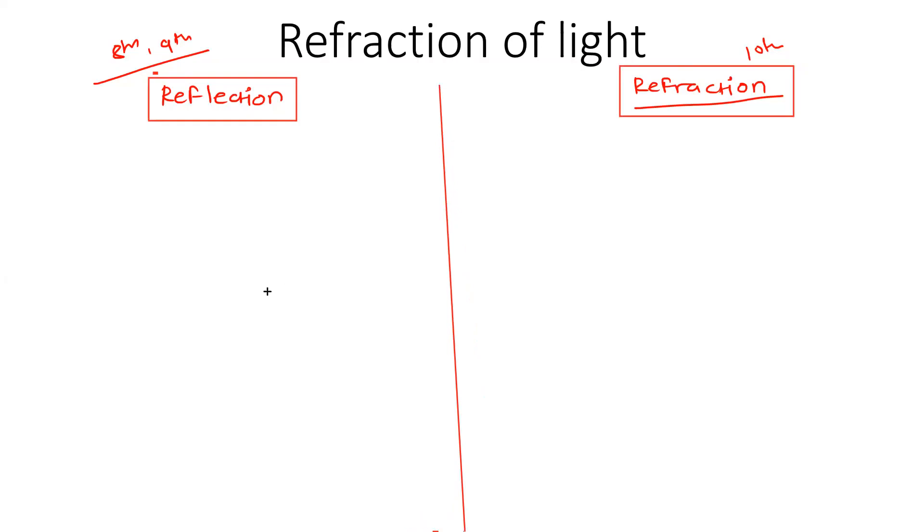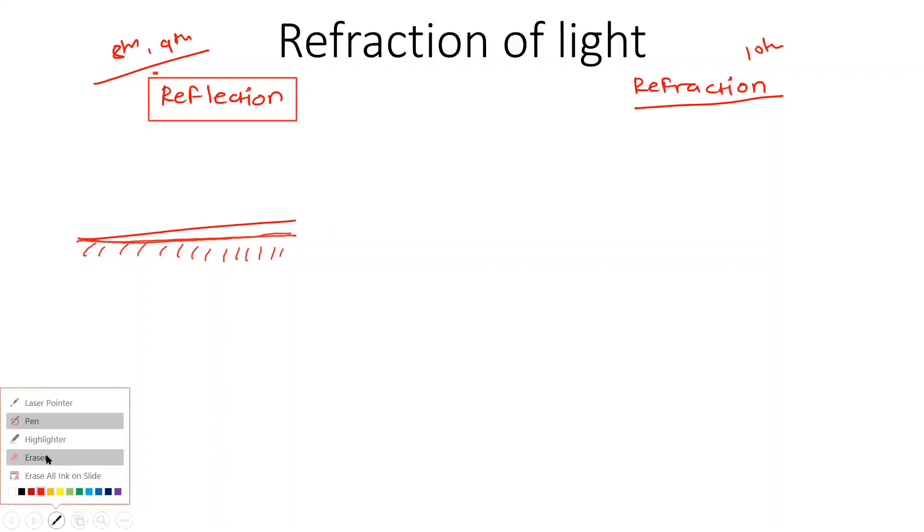First we'll start with reflection. So suppose you have a surface. So this is your surface. Now what is happening? There is one ray which is coming towards the surface. So now this ray will incident at this point.